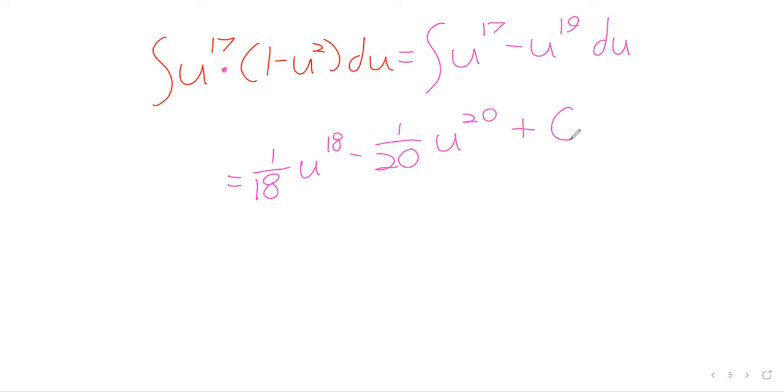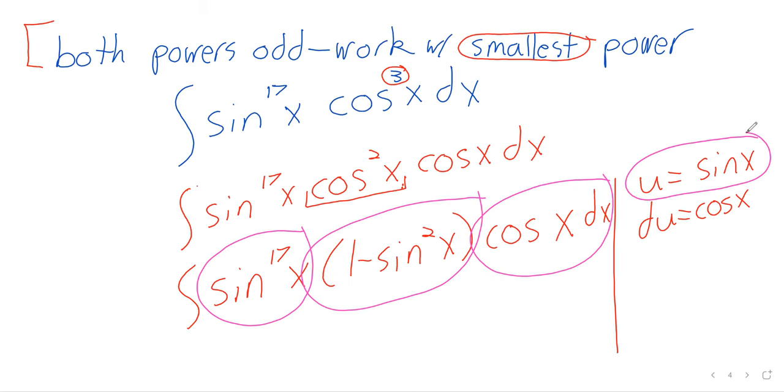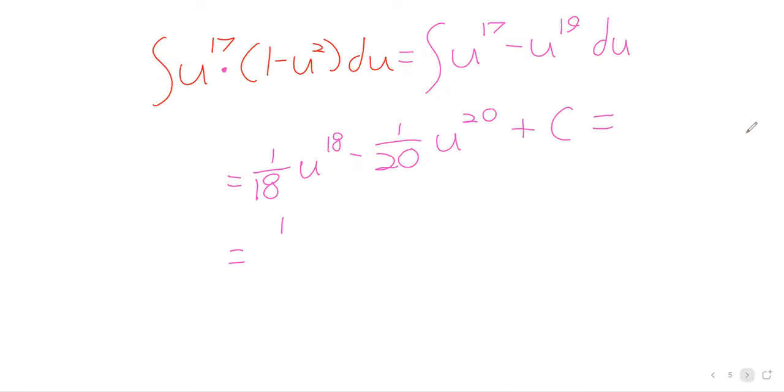And U was the sine here. So 1/18th the sine of X to the 18th minus 1/20th the sine of X to the 20th plus a constant of integration. So you see that. I mean, this was a really extreme difference. Just because the smallest power was so much smaller than the larger power. But it's always going to be simpler algebraically to use the smallest power. If you've got two odd powers, then you can make a choice.